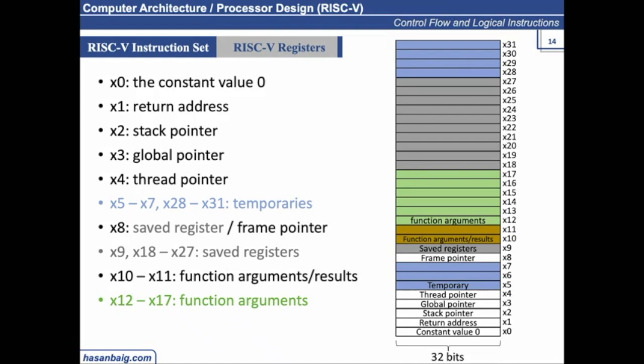Similarly, X1 contains the return address. So you have been writing functions. So you write a definition of a function in Python, and then you call a function. So when you call a function, it jumps to a certain location, executes certain piece of instructions, and then jump back to the place where the function was called from, right? That is called the return address, where it is supposed to be returning back. So it is stored in X1.